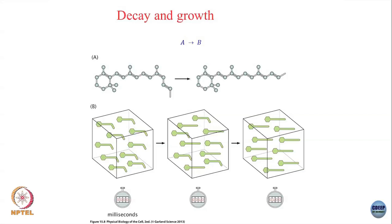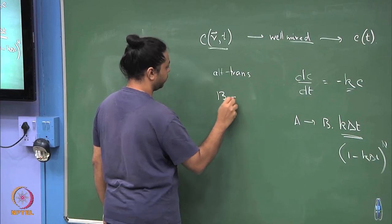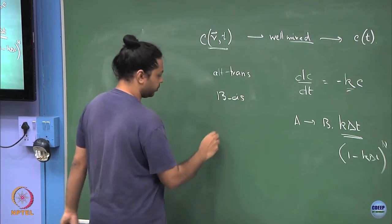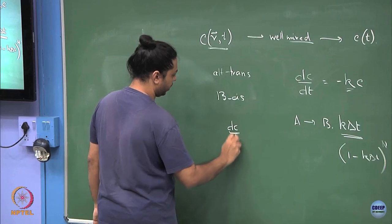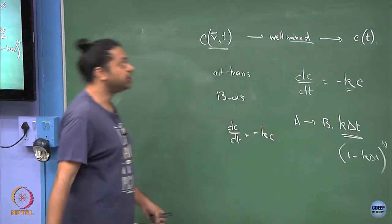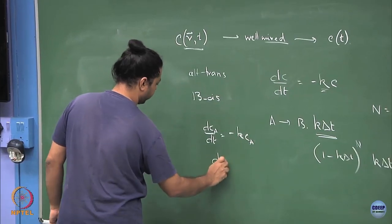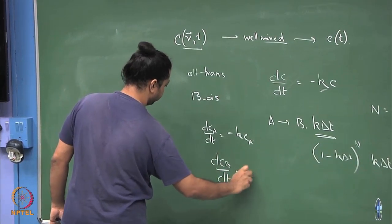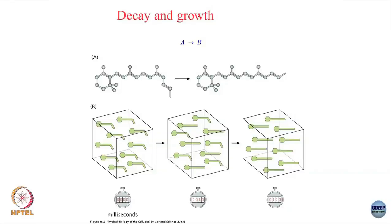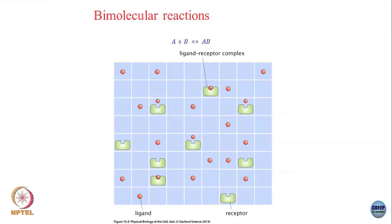Recall we had two states: all-trans (A) and 13-cis (B). I wrote the concentration profile of one as dA/dt = −k·c, but I could also write the concentration of the other one B — that is simply the inverse: whenever A decays there is a growth in B. So these are coupled, and in principle I could write coupled equations between them as well.